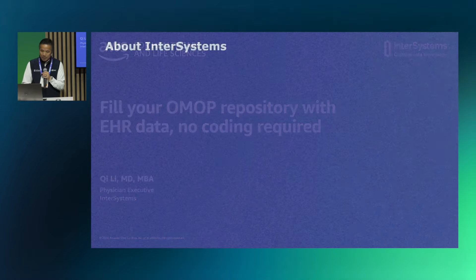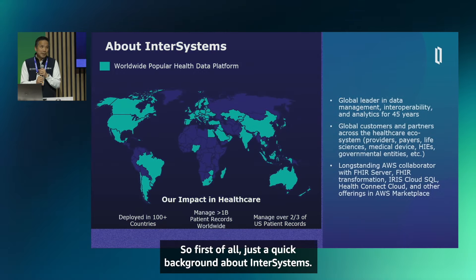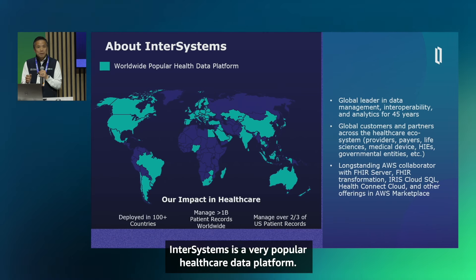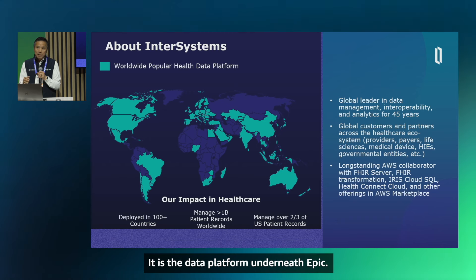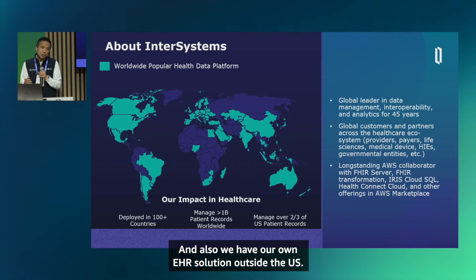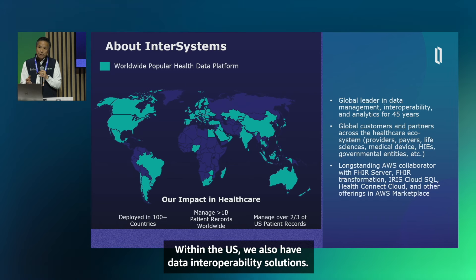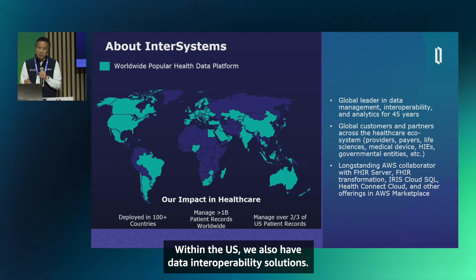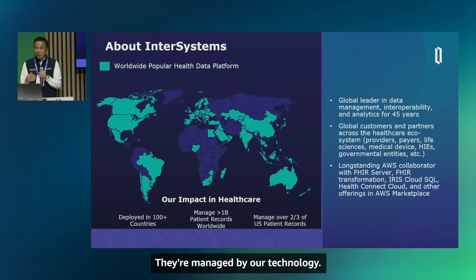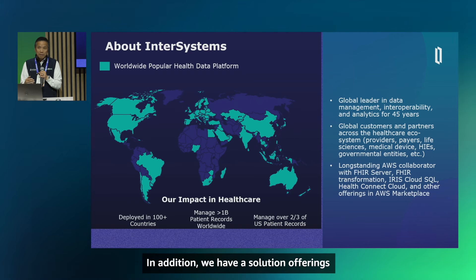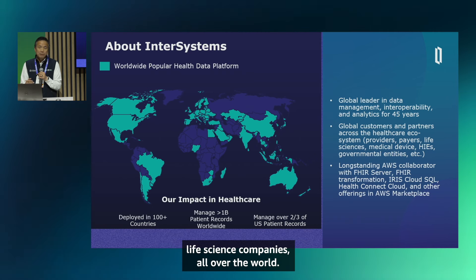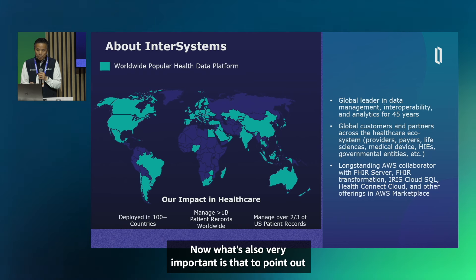Just a quick background about InterSystems: it is a very popular healthcare data platform, the data platform underneath Epic. We also have our own EHR solution outside the US, and within the US we have data interoperability solutions. Combined, we have over one billion patient records managed by our technology, with solution offerings for governments, hospitals, payers, and life science companies all over the world.